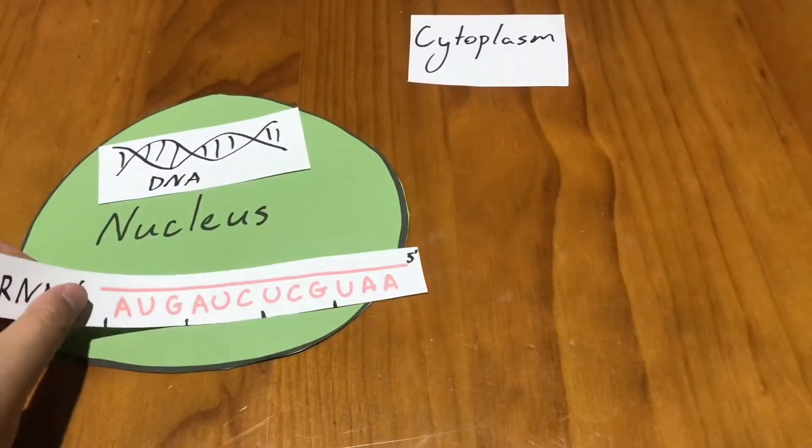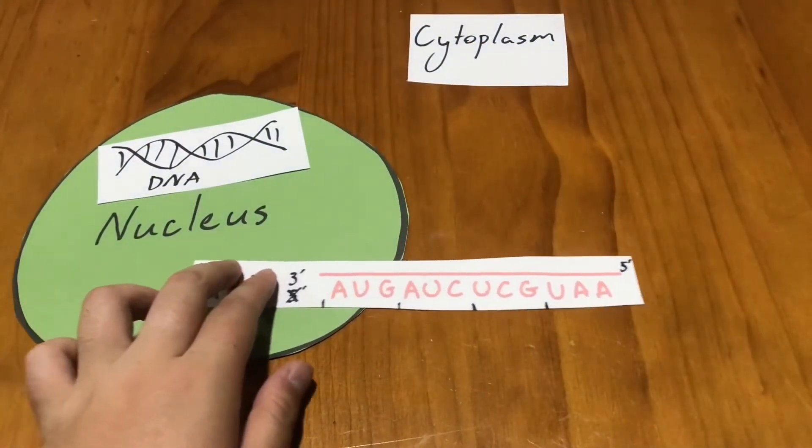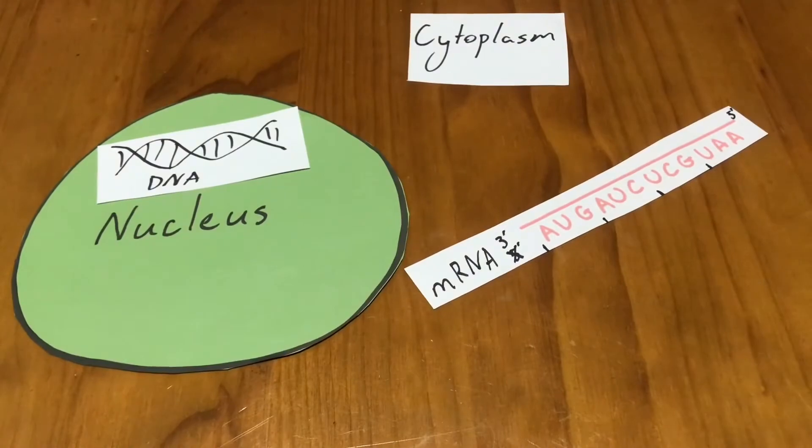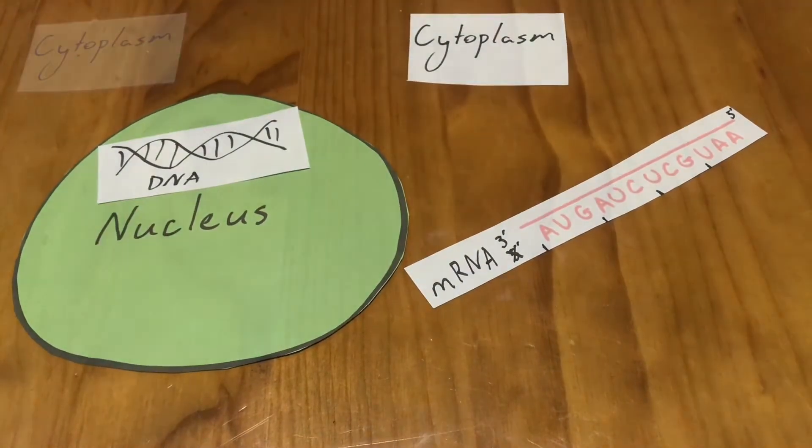Once formed, the mRNA then travels from the cell's nucleus through the nuclear membrane and into the cytoplasm where it will attach to a ribosome.